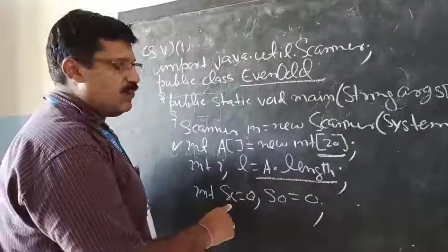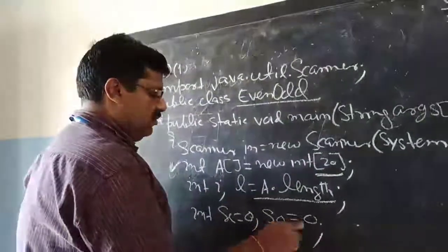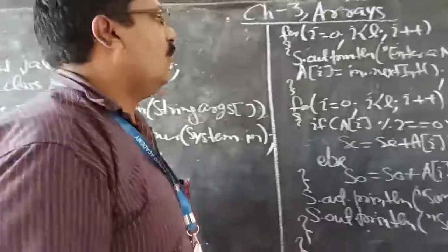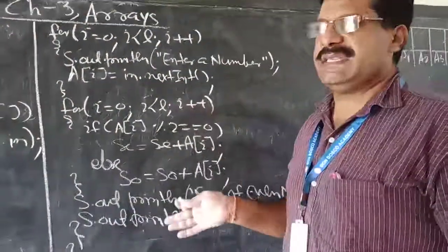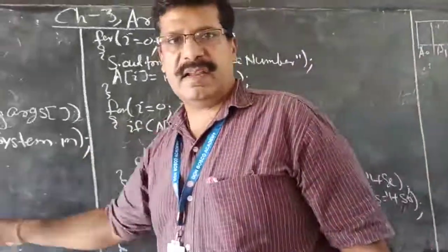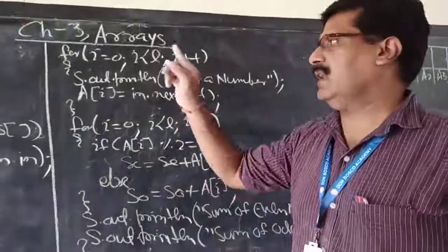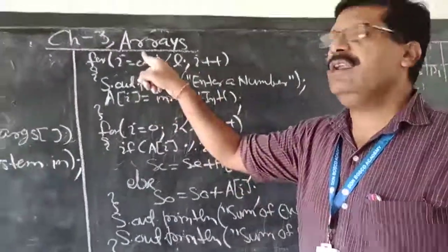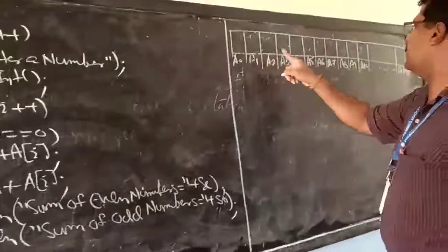We declare int se — sum of even — equal to 0, and sum of odd equal to 0. Two variables are taken according to the question. Now, for inputting numbers into the array, we write: for(i = 0; i < n; i++). The value of n will be 20, so the loop will run from 0 till 19.